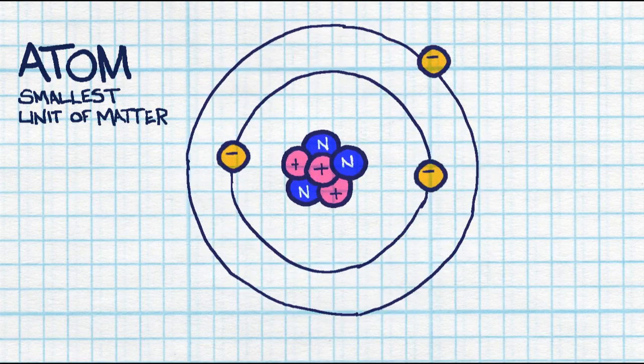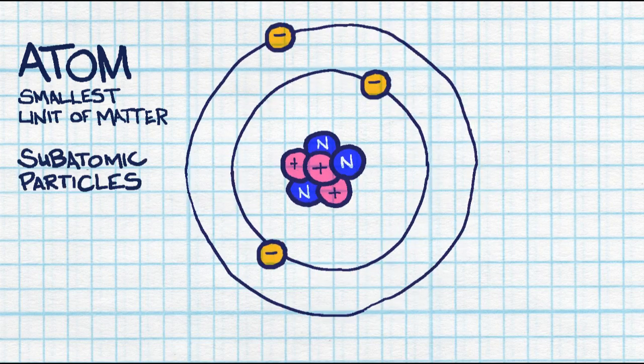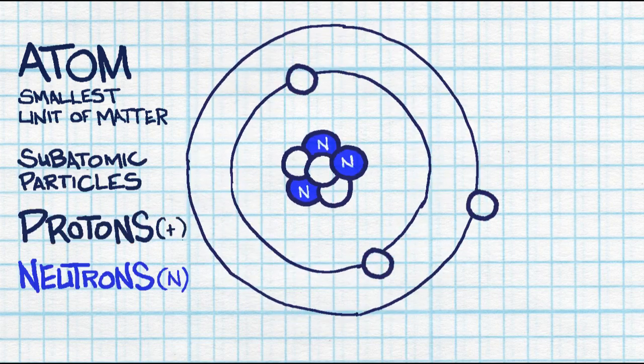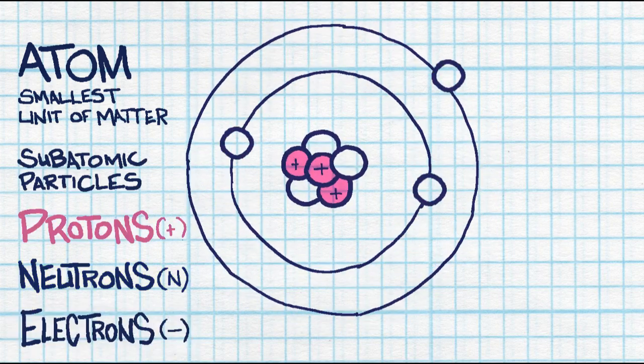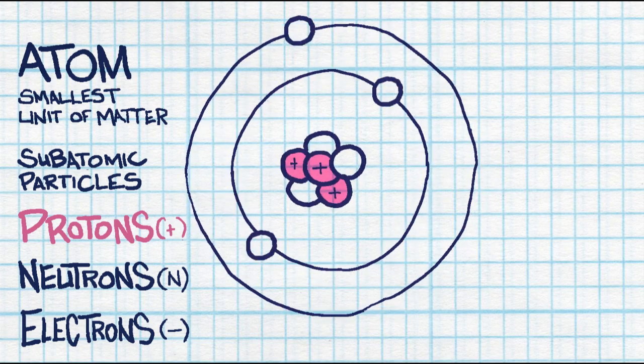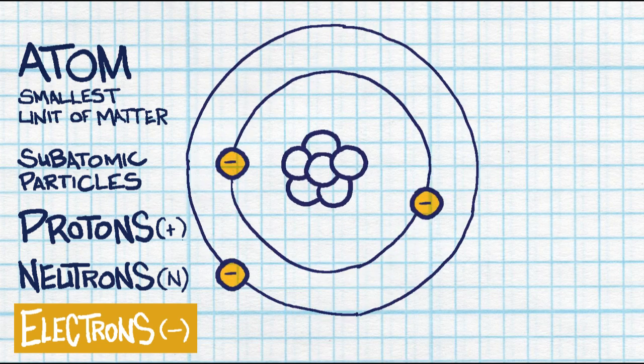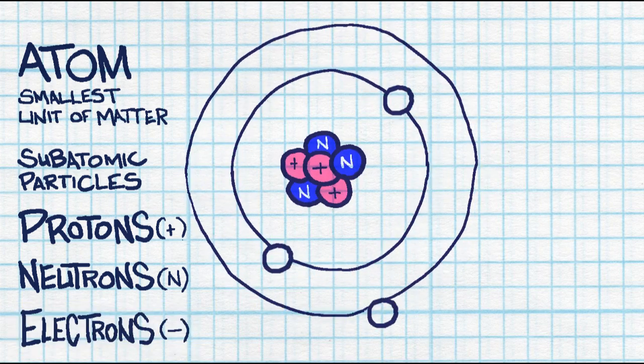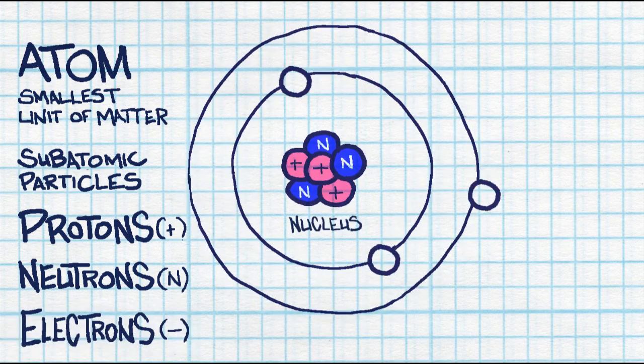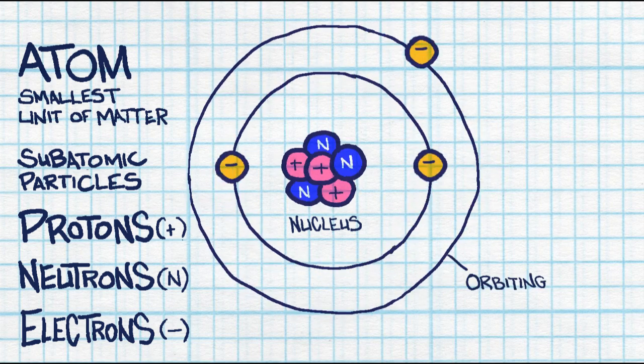These atoms are made up of other subatomic particles called protons, neutrons, and electrons. Protons have a positive charge, neutrons have a neutral charge, and electrons have a negative charge. The protons and neutrons can both be found inside the nucleus, whereas the electrons are orbiting around.